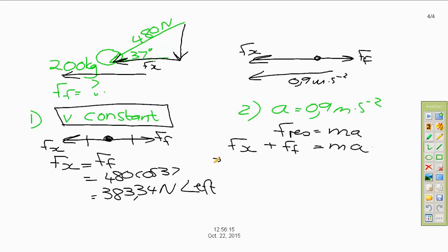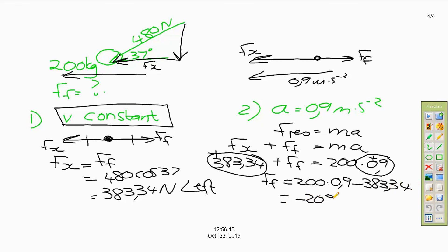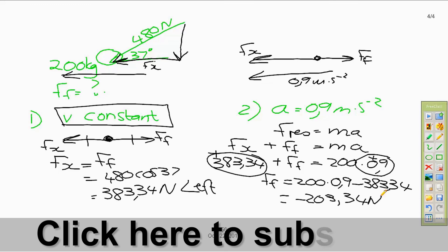We already have fx as 383.34 Newton. We know mass is 200 kg and acceleration is 0.9 meters per second squared. Using left as positive, fx is positive and acceleration is positive, both to the left. Solving: friction force equals 200 times 0.9 minus 383.34, giving minus 203.34 Newton. The negative answer means the opposite direction, so the frictional force is 203.34 Newton to the right.